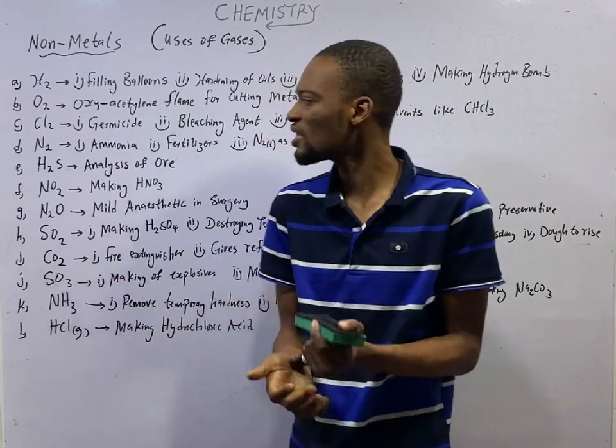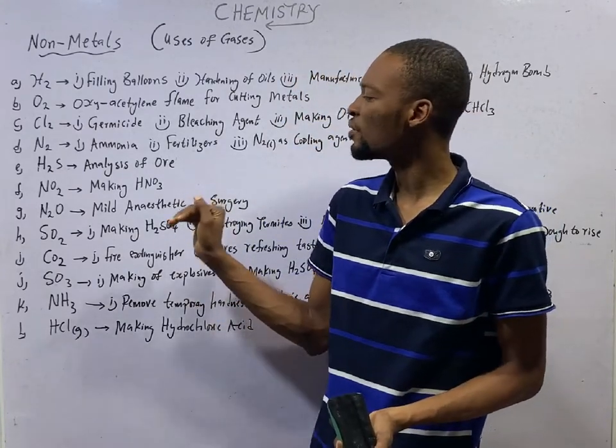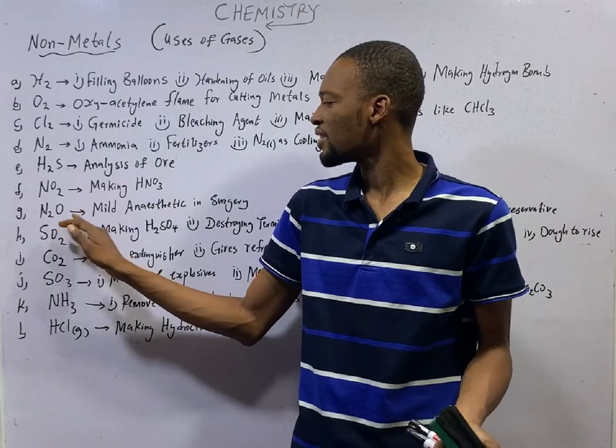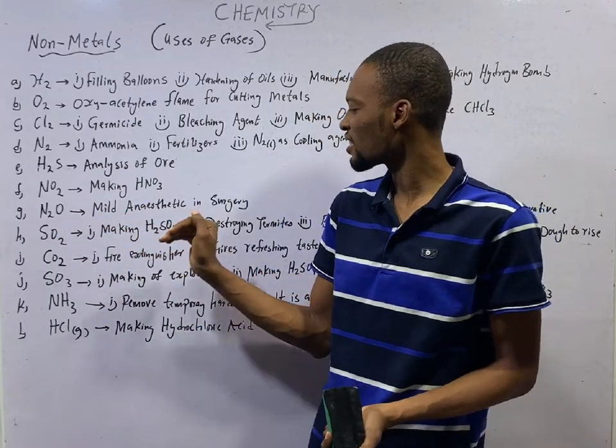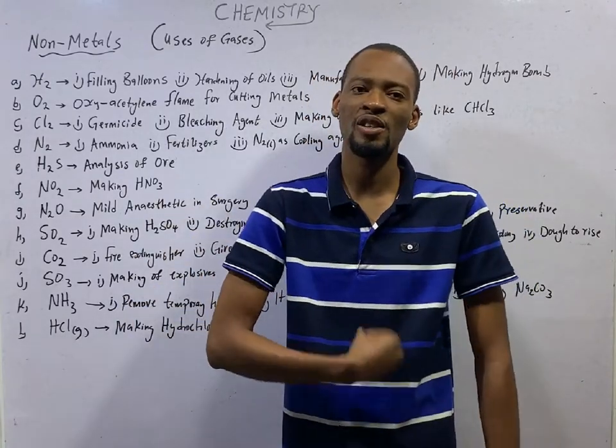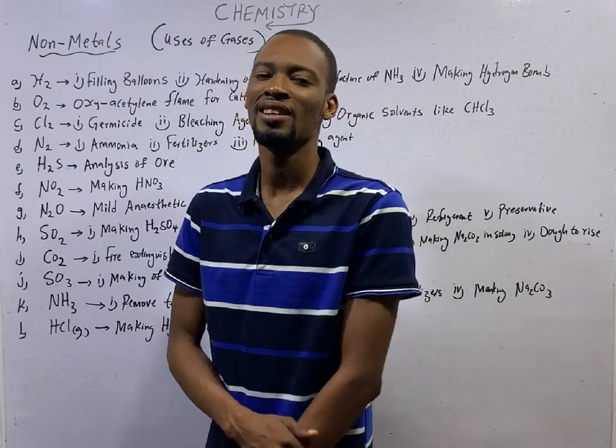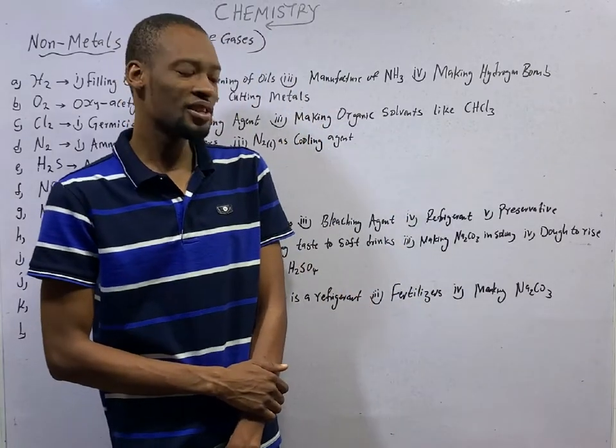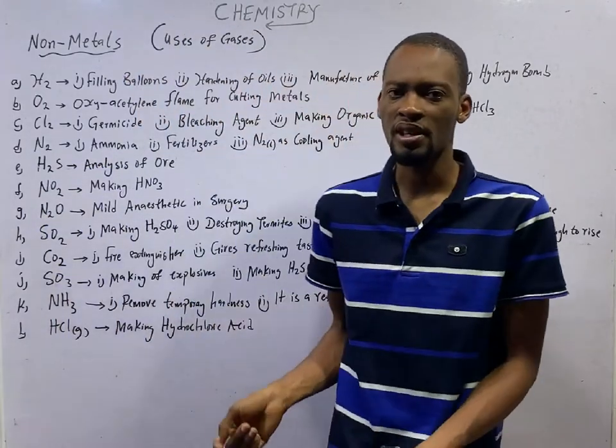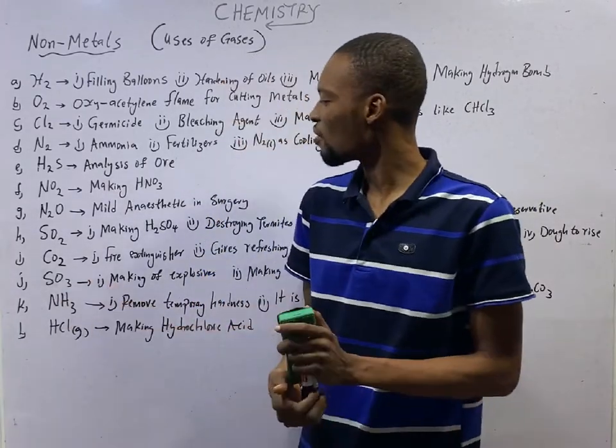Hydrogen sulfide gas is used in analysis of ore. Nitrogen tetroxide is used in making HNO3, which is trioxonitrate(V) acid. Nitrogen monoxide is used as mild anesthetic in surgery. To carry out surgery, you can apply nitrogen monoxide so that as you are carrying out your operation, the patient doesn't feel the pain. If people actually feel pain during surgery, ladies and gentlemen, there is no way you can bear the pain. But they apply anesthetics to you so that you don't feel the pain. They can literally be cutting you, but you won't feel any pain. That is the use of anesthetics.